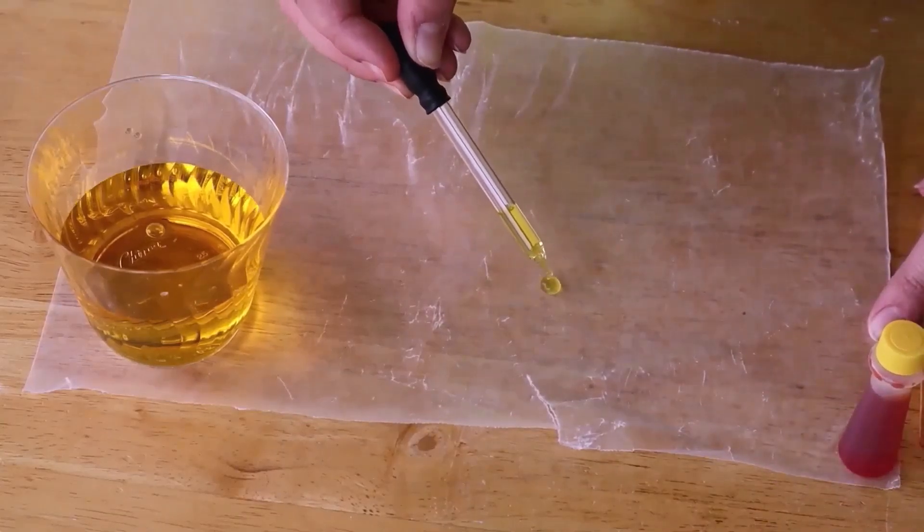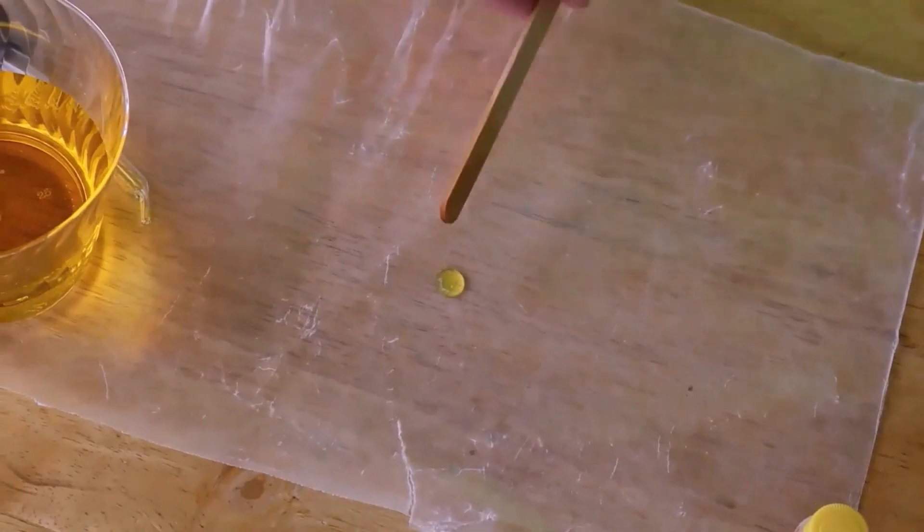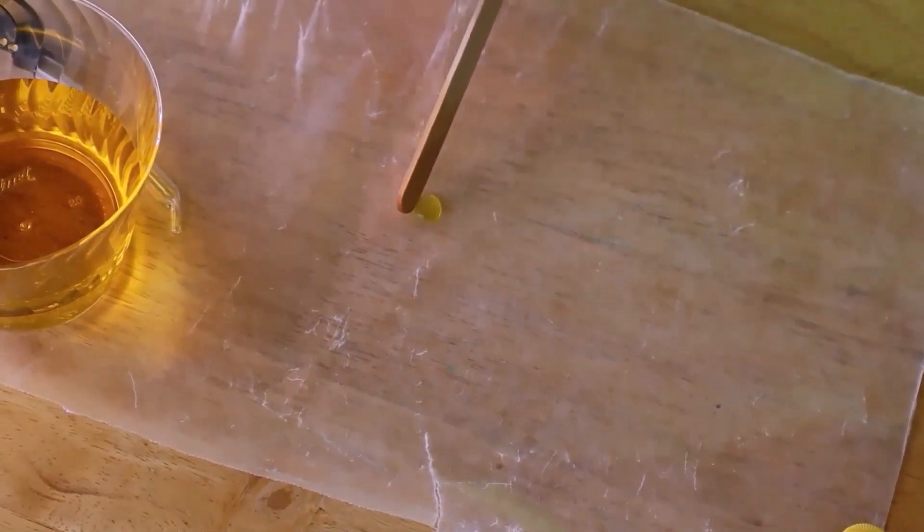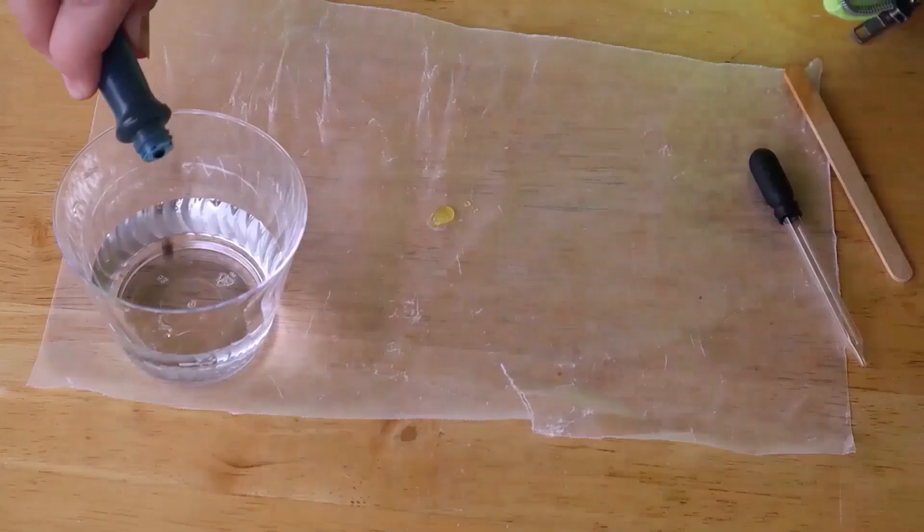The students take their eyedropper and place some of the water onto the paper. Then they take their craft stick and move it around, observing the movements and describing what they see.